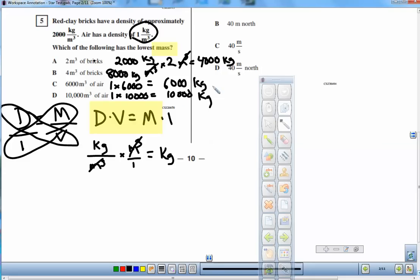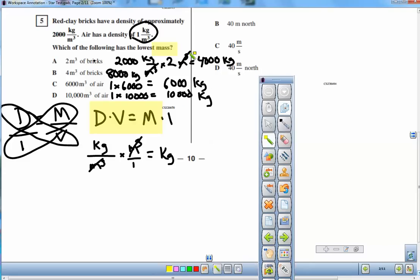So it's really asking which of these quantities of 4,000, 8,000, 6,000, and 10,000 is the smallest, and hopefully it's pretty clear that it's letter A. So even though it's bricks, it has less mass than a whole lot of air, a big volume of air. So that's number 5.